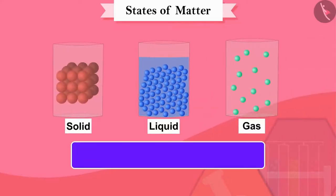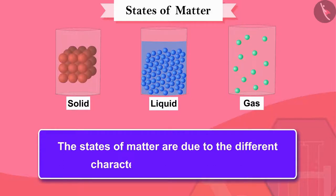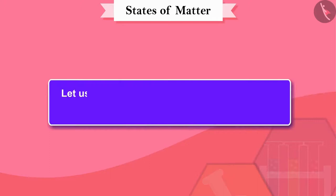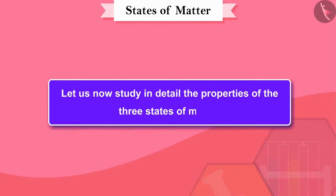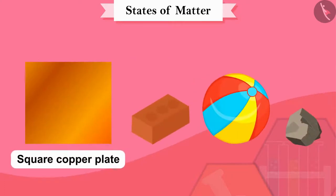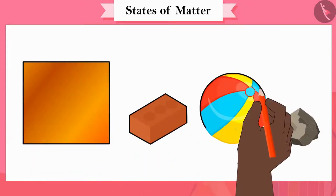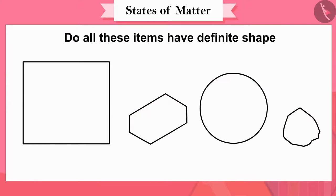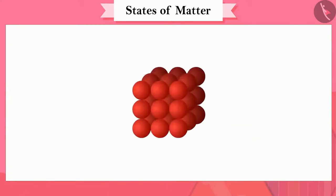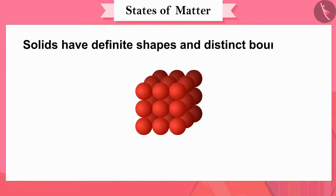The states of matter are due to the different characteristics of its particles. Let us now study the properties of the three states of matter in detail. First, we will study the solid state. Collect these items: a square copper plate, brick, ball and stone. Draw the shape of all these objects on a paper. All these items have a definite shape and clear boundaries. Therefore, solids have definite shapes and distinct boundaries.